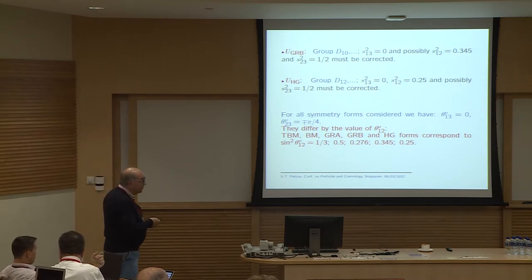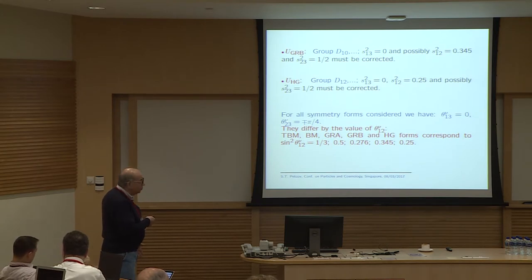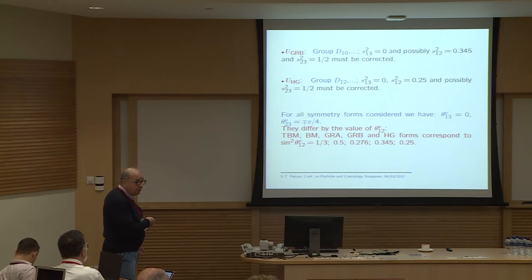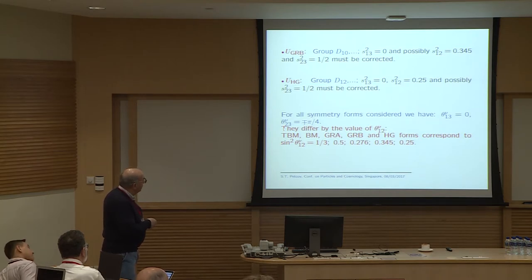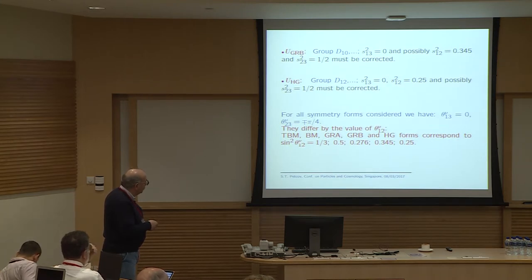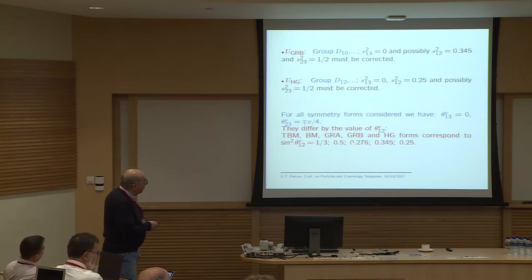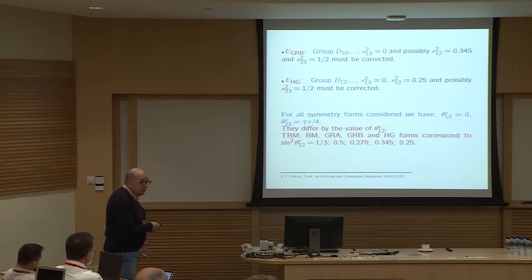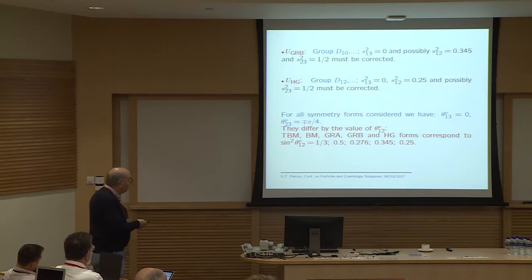For all these symmetry forms, θ₁₃ is zero and must be corrected; θ₂₃ is π/4 and must be corrected if there are significant deviations. They differ by the value of θ₁₂ᵥ: sin²θ₁₂ᵥ is given by 1/3 (tri-bimaximal), 0.5 (bimaximal, needs correction), 0.276 (golden ratio A), 0.345 (golden ratio B), and 0.25 (hexagonal, needs correction).